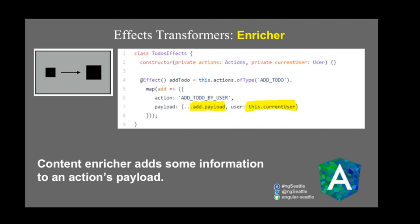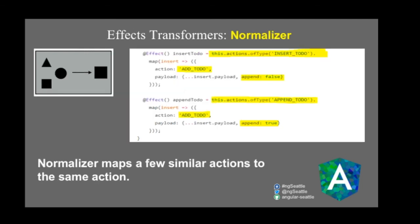Two transformer types: the content enricher adds information to an action's payload. For example, for an 'add-to-do-by-user' action, you take the payload and append the current user. The normalizer maps several similar actions to the same action. For instance, both 'insert-to-do' and 'append-to-do' can be normalized to a single 'add-to-do' action, each providing different information in their payloads. The two actions ultimately map to the same outcome.